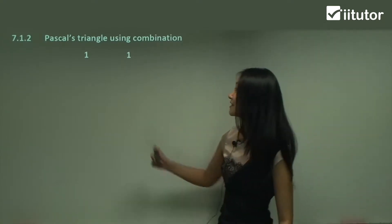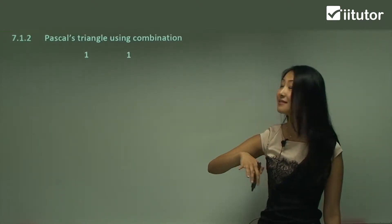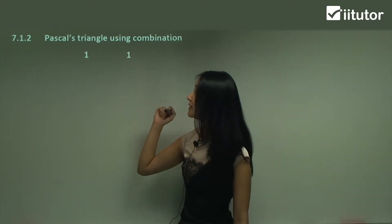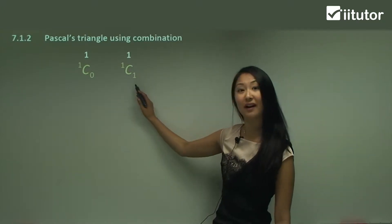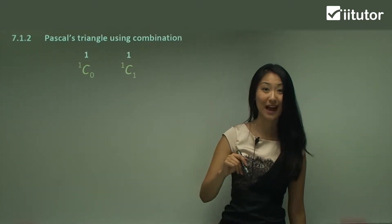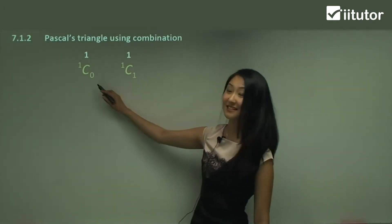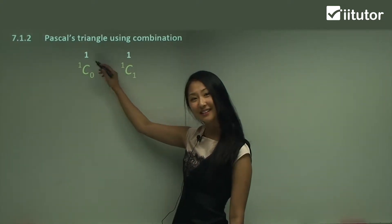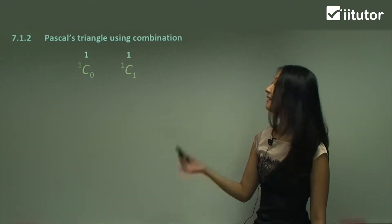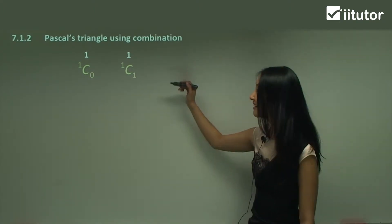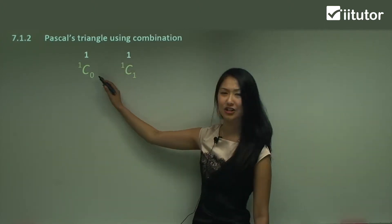Pascal's triangle starts off with one, one — and we can use combinations to work out these numbers. One and one can be worked out by 1C0 and 1C1. Let's practice putting that into your calculators: press one, then the C button, then zero — you get one. Now put in 1C1 and you get one as well. You can see how we use combinations to get one and one, but how do we know which combination to put in?